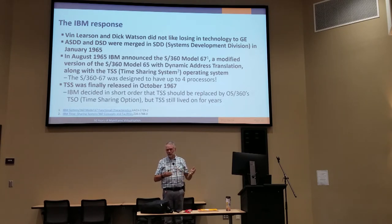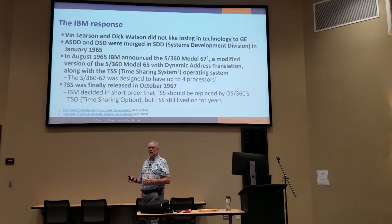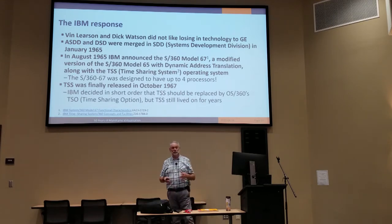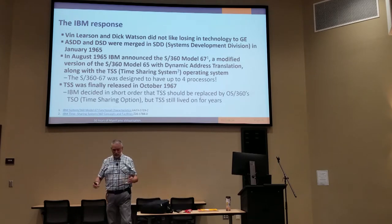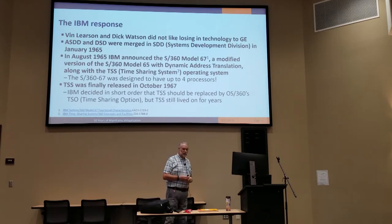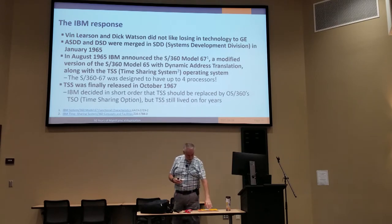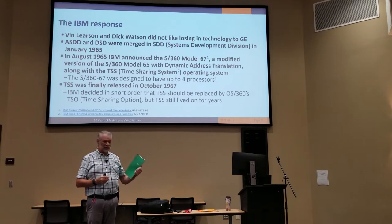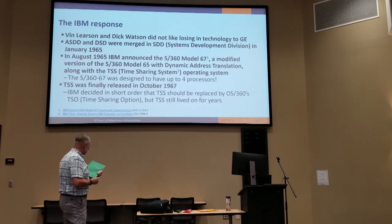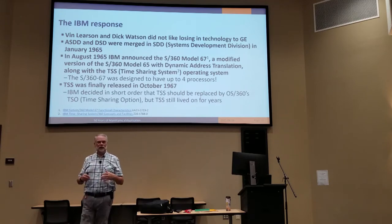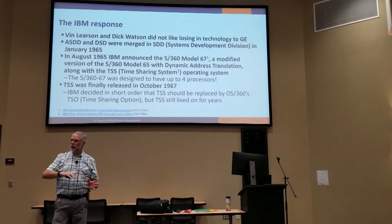IBM merged ESD and ASDD into SDD — IBM likes changing division names regularly. In August 1965, IBM announced the 360-67, a modified 360-65 with a DAT box — an entire frame, about two feet by six feet high. The operating system announced with it was TSS, Time-Sharing System. This is the Concepts and Facilities Manual for TSS — I've been carrying it around for decades because I actually used it. It's the oldest manual I have from IBM.